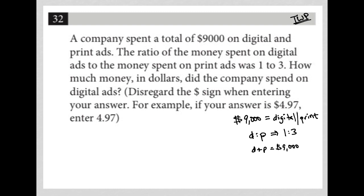So D to P is one to three, but I know that D plus P is 9,000. Again, anytime you see a ratio, a ratio is always in reduced form, right? So one to three could be 1,000 to 3,000, 10,000 to 30,000.